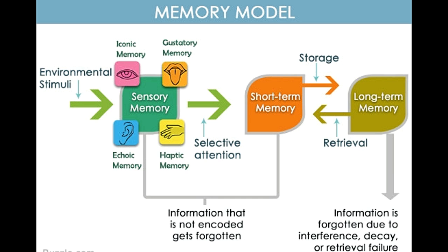The terms echoic memory and iconic memory were coined by Ulrich Neisser in 1967. Iconic memory is the sensory memory for vision, whereas echoic memory is the memory for audition, or hearing.